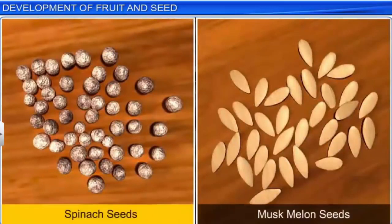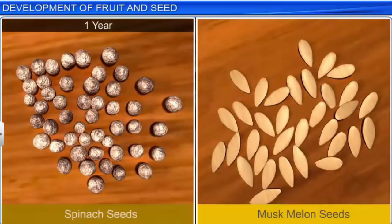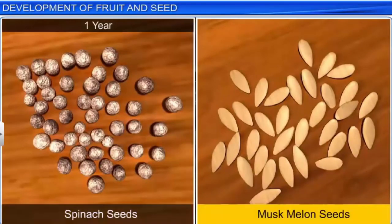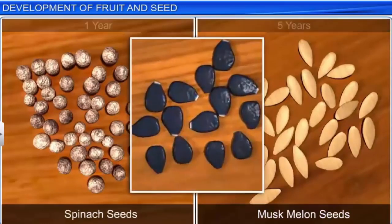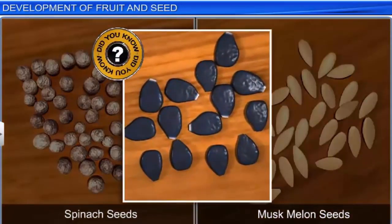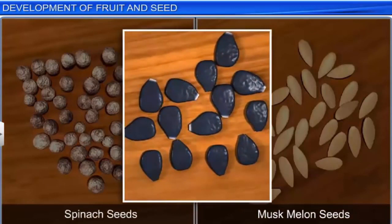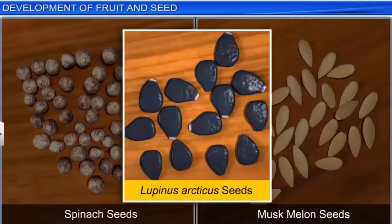The seeds of spinach, for instance, remain viable only for a year or so, whereas musk melon seeds remain viable for five years. Did you know that excavations around the arctic tundra region have led to the finding of seeds of Lupinus arcticus, which remained viable for 10,000 years before germinating and flowering?